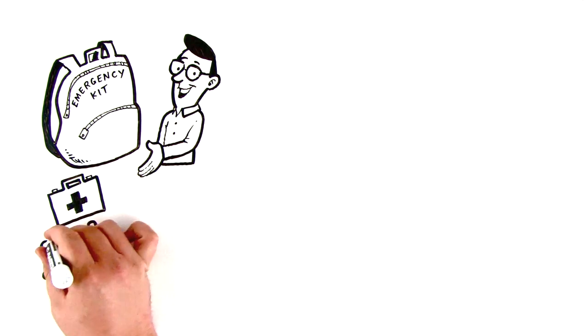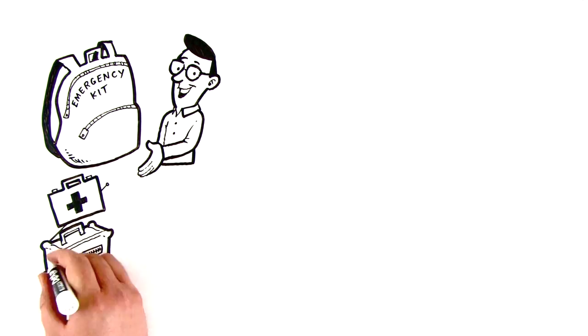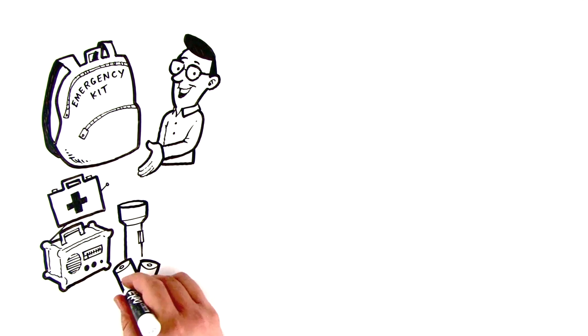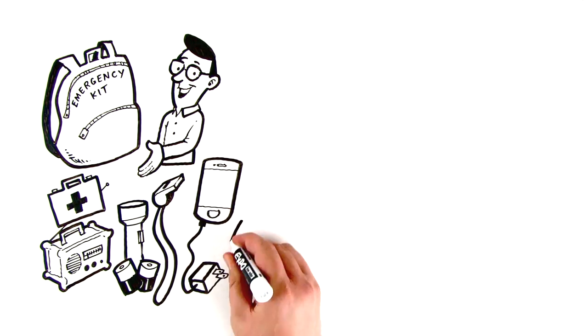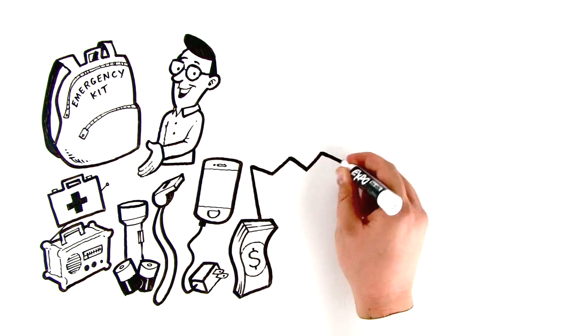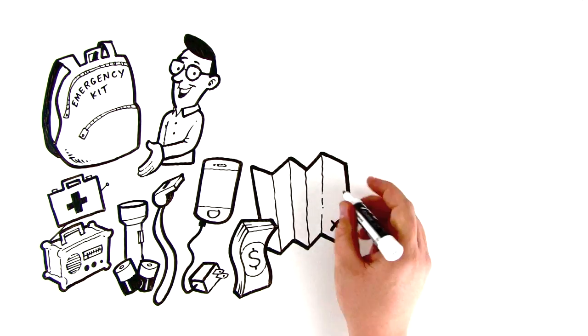A first aid kit, battery-powered or hand-crank radio, flashlight, extra batteries, an emergency whistle, cell phone with charger, cash in small bills, and a local map with your family meeting place identified.